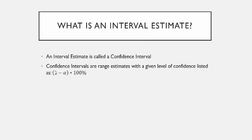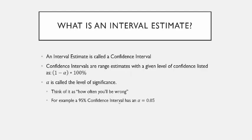The confidence level is denoted as 1 minus alpha times 100%. Alpha in statistics is what's called the level of significance. Think of alpha as how often you'll be wrong. In this video we're going to construct a 95% confidence interval. If you're going to be 95% confident in your results, that means you're going to be wrong 5% of the time. So alpha is equal to 0.05.